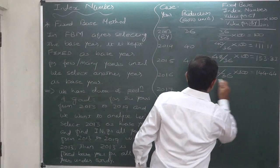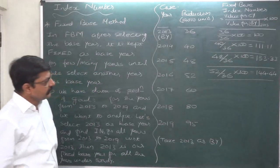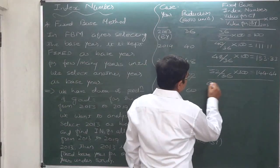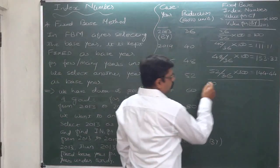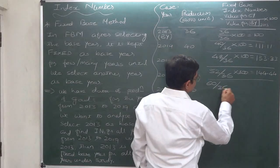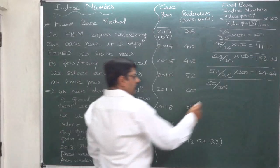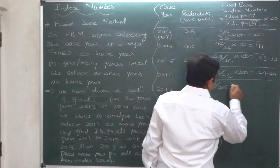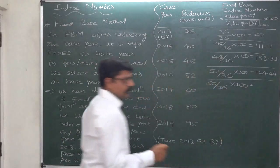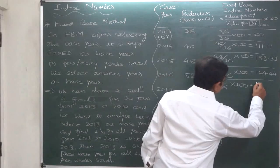In the year 2017, the value for the current year is 60, the value for the base year remains 36 — fixed base method — multiplied by 100. The ratio into 100 gives the percentage index number, which comes to 166.67.